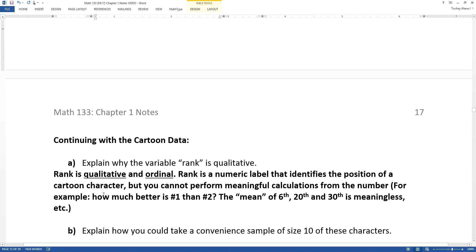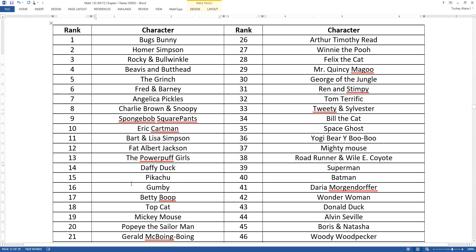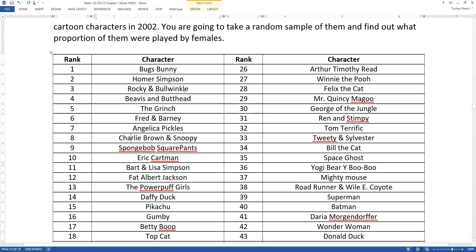Even though it's a number, it's still qualitative, but it's actually an ordinal qualitative number because you can tell there's an order. There's a first one, which is Bugs Bunny, and a second one, which is Homer Simpson, and a third one, which is Rocky and Bullwinkle, one of my sister's favorites. First, second, third, you know who's considered better than whom, but you don't know by how much.